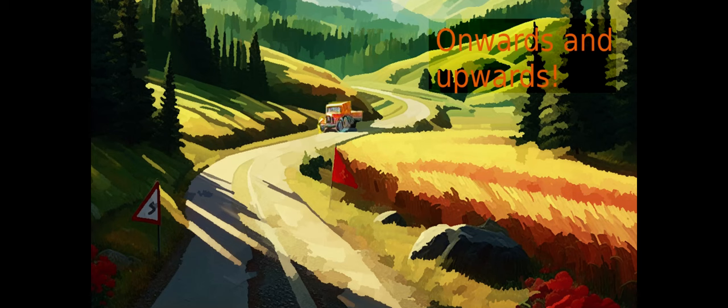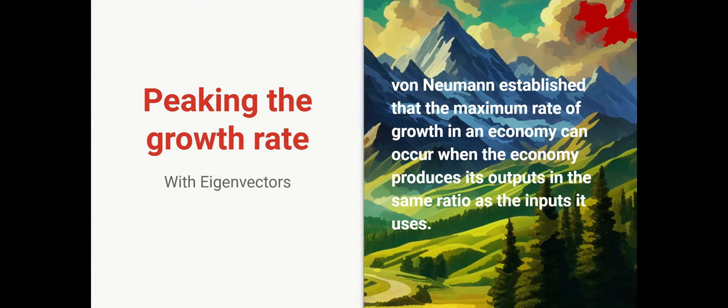Now, let's consider growth onwards and upwards. Von Neumann established that the maximum rate of growth in the economy occurs when the economy produces its outputs in the same ratio as the inputs it uses. You get the same concept occurring in Sraffa, in his book Production of Commodities by Means of Commodities, but it's Von Neumann who invents it. Now, how does he come to this? It's about eigenvectors.